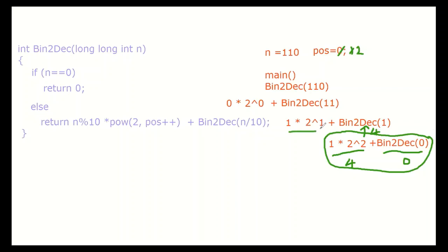What about this part? 2 to the power 1 is 2, into 1 is again 2. Addition of this result, what is the result? 2 plus 4, it is 6. 6 will go to the parent function. Here what is the result? 2 raised to the power 0 is 1, but into 0 is 0 only. So it is 0 plus 6. The answer which will go to the parent function is 6.